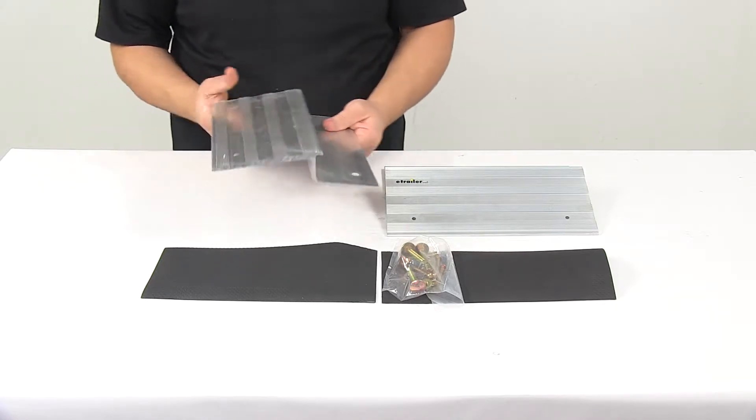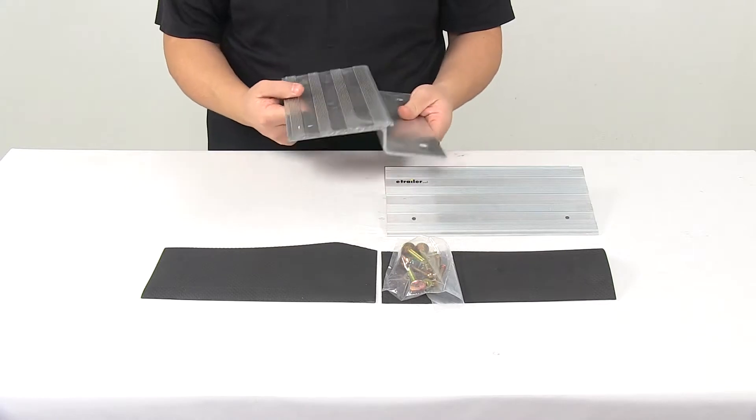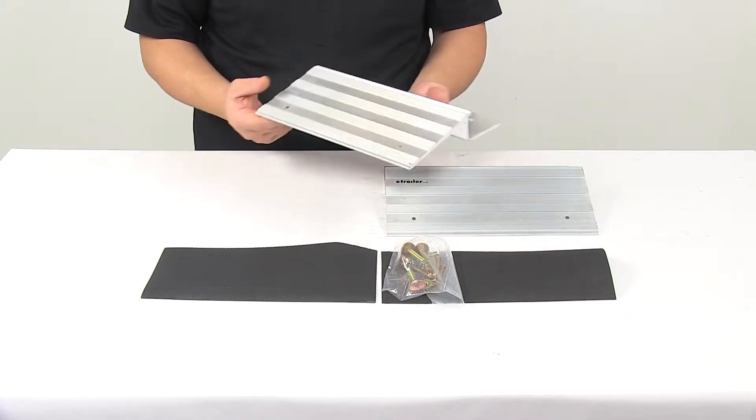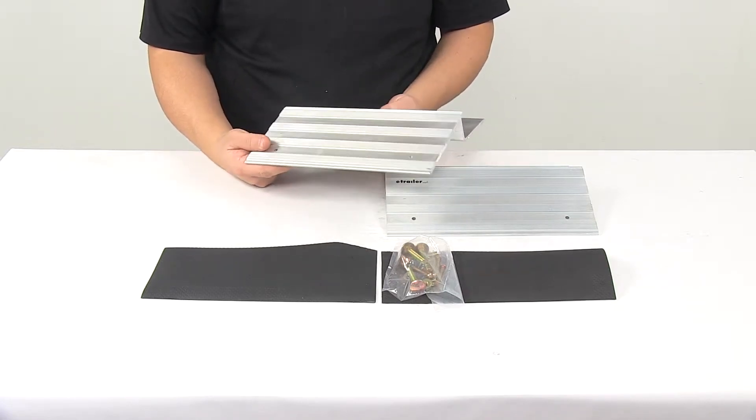These aluminum ramp plates easily convert a board into a ramp, that way you can easily load your ATV, motorcycle, lawn equipment, power equipment, and so on. This is ideal for use with trucks, vans, or trailers.